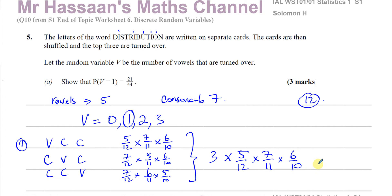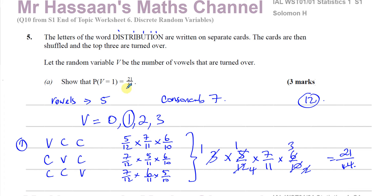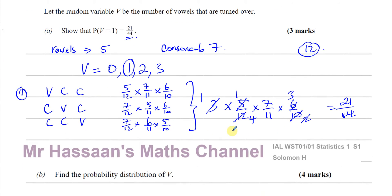Cancelling: 3 and 12 cancel to give 4; 5 and 10 cancel to give 2; 2 and 6 cancel to give 3. We're left with 7 × 3 = 21 on top and 4 × 11 = 44 on the bottom. So P(V=1) = 21/44, which is what we had to show.